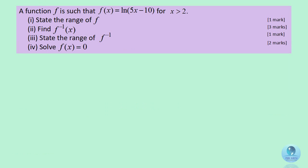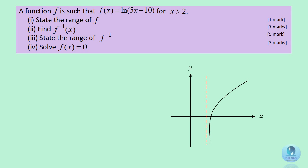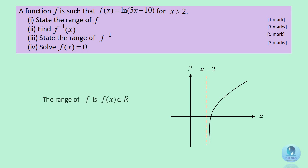To get the answer, sketch the graph for f(x) equals the natural log of (5x minus 10). Note that it has an asymptote at x equals 2, so the range for the function f is the set of all real numbers.